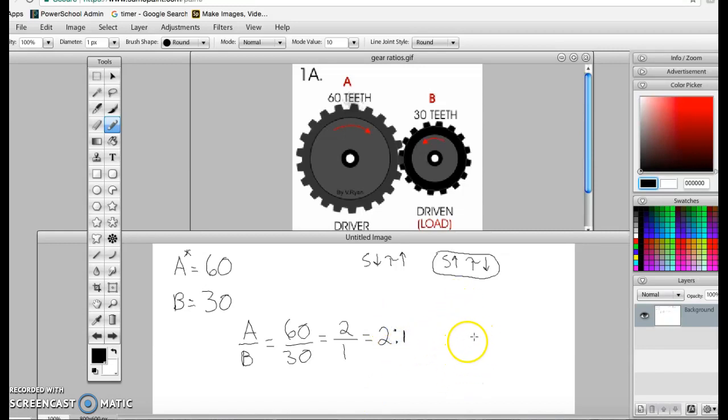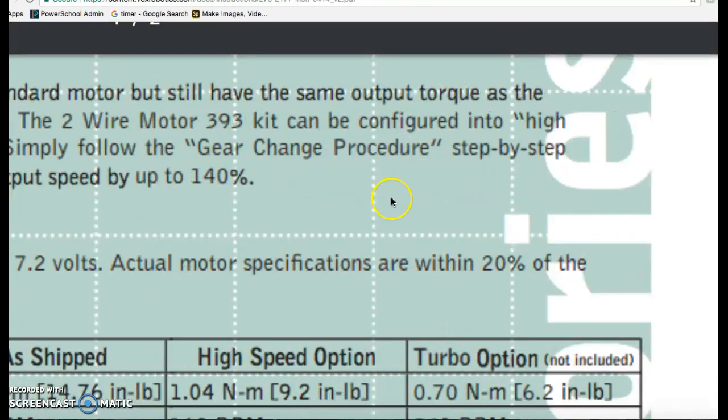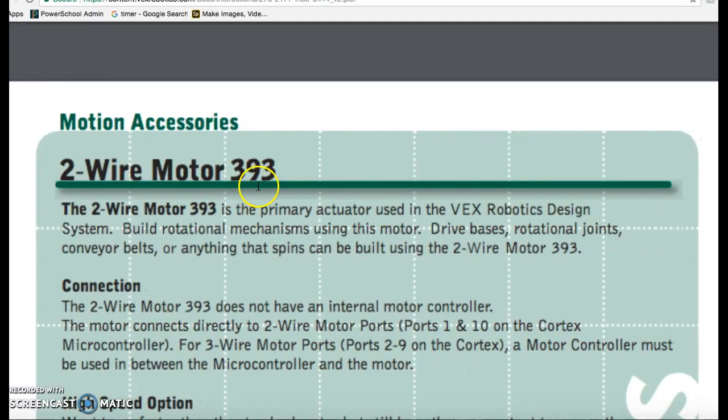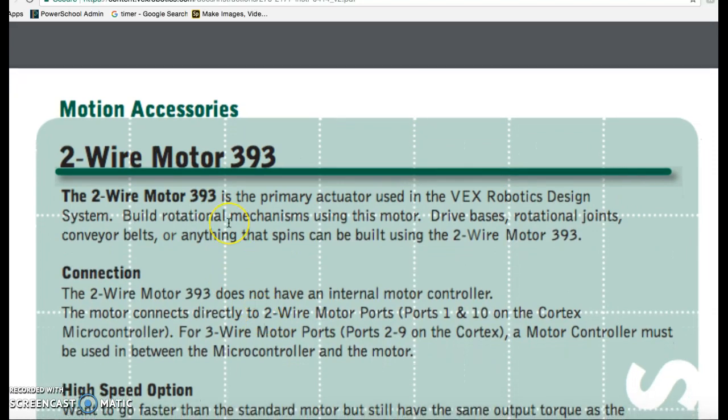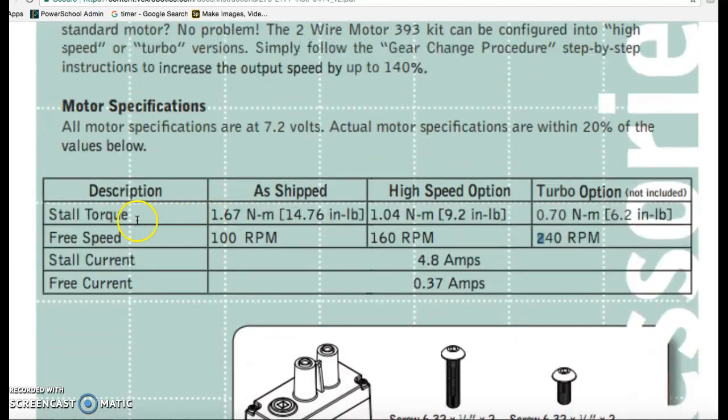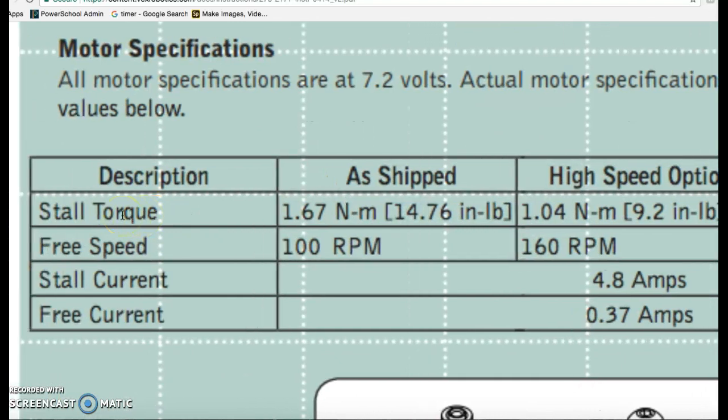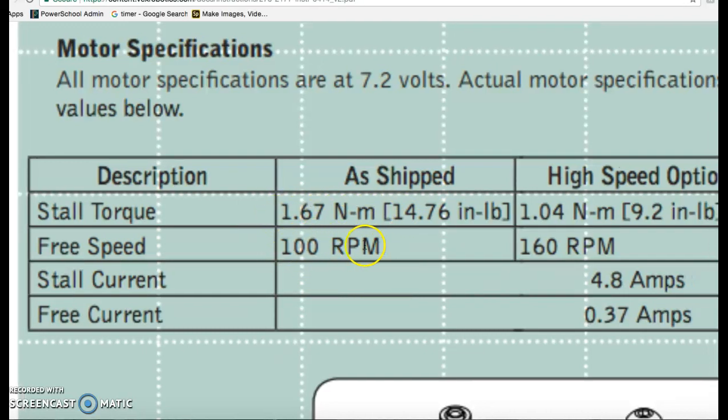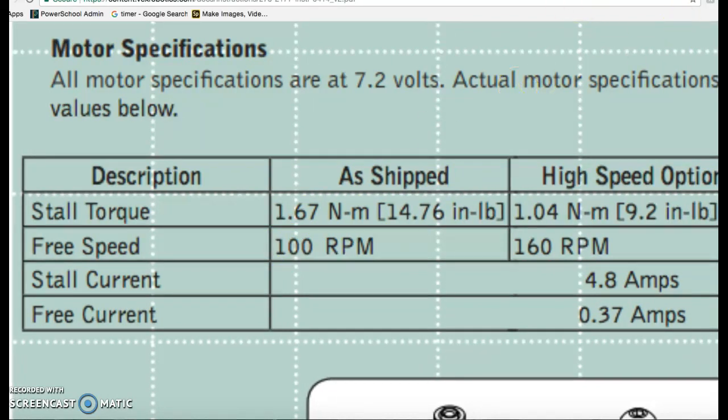Now we have to get the torque for the driver and we need to figure out the speed of it. We're going to take information from the VEX website. This is for the two wire motor 393, a VEX motor, and we need to know the stall torque and the free speed. We see that the stall torque is 1.69 newton meters and the angular velocity or speed is 100 RPM.